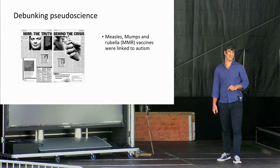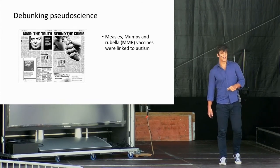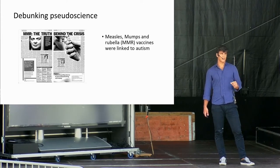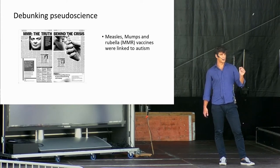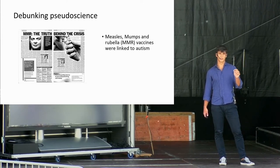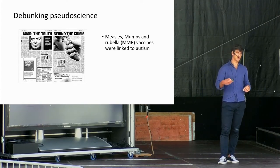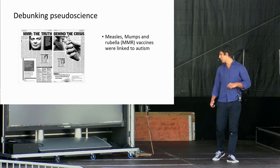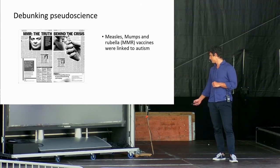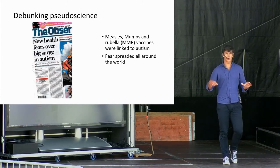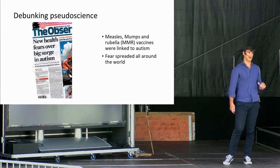In 1998, British doctor Andrew Wakefield stated that vaccines that were supposed to cure measles, mumps, and rubella, the so-called MMR vaccines, were supposed to cause autism. Of course, this piece of news and of research quickly spread all over the world and led to an almost immediate drop in vaccination rates. But there was a fundamental problem.